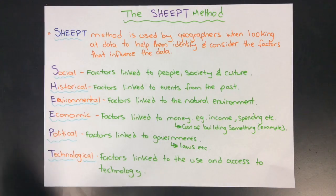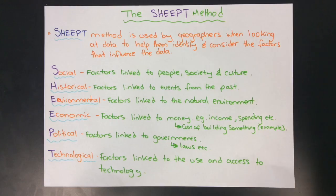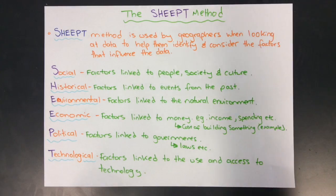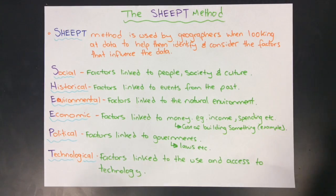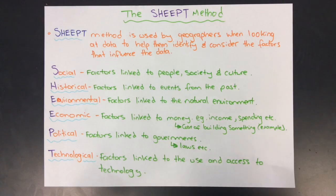They might consider S for social — social factors like people, society, culture, how they interact with each other, and how that influences the data that they're gathering.